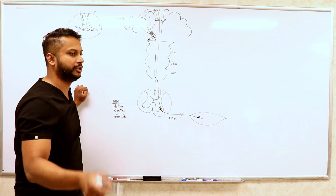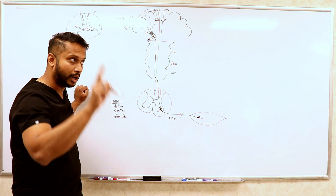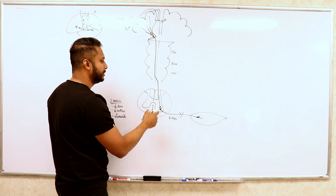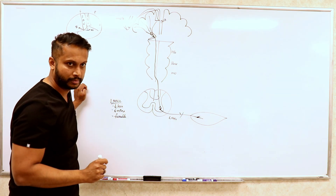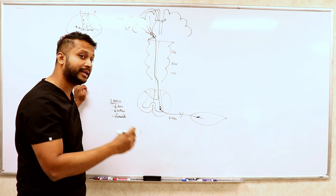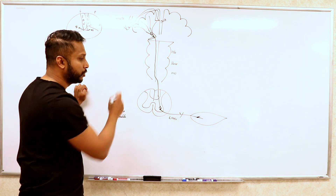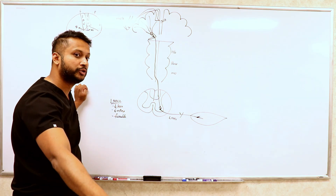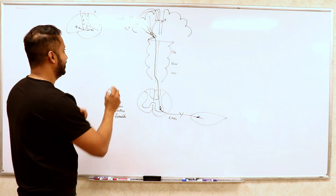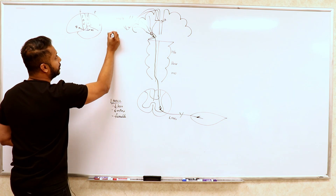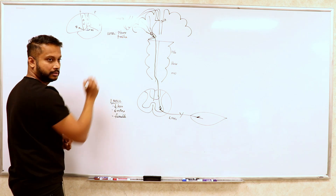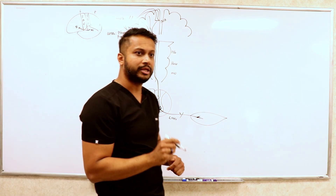It's important to understand why you get lower motor neuron lesion features. When it comes to upper motor neuron: the upper motor neuron brings inhibitory fibers to your lower motor neuron. If you have an upper motor neuron lesion, you take away the inhibition on the lower motor neuron — so you get increased tone and increased reflexes. That's the important thing to know first.